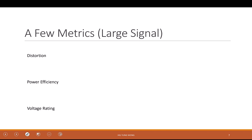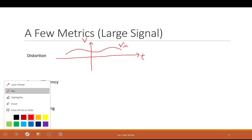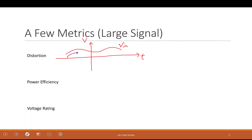When you have a large signal, what happens? I'll use a source follower as an example. You may get distortion. For small input, the source follower just shifts the signal down — the output preserves the shape of the input. But what if I have a large signal with a lot of swing?